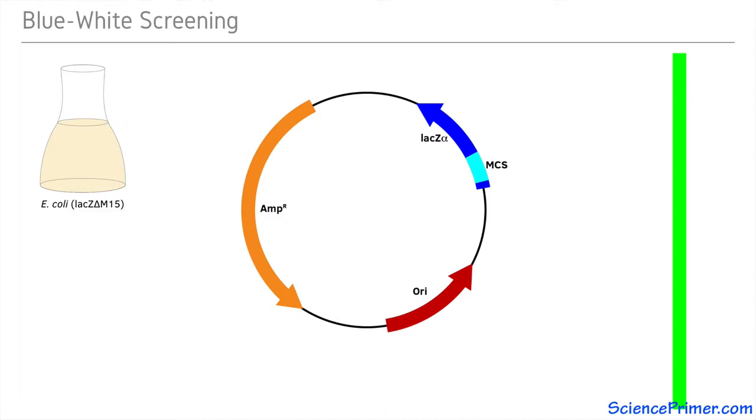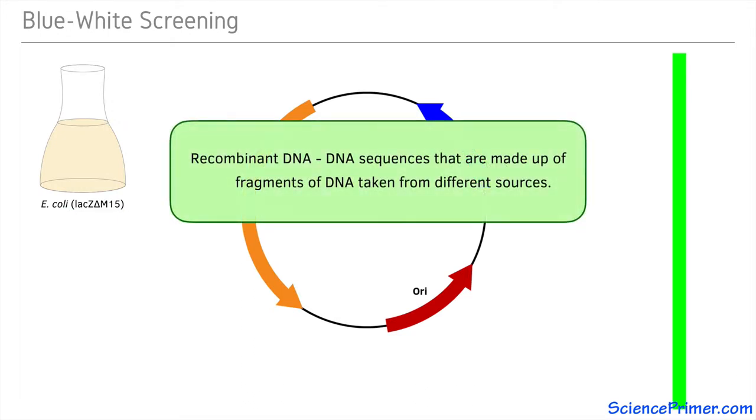Because the DNA in these plasmids has been modified, vectors are an example of recombinant DNA. Recombinant DNA sequences are sequences made up of fragments of DNA taken from different sources. Recombining DNA in this way allows researchers to create sequences with features or functions not found in the source material.